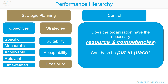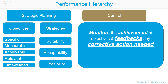With performance management, controls are used to monitor the achievement of objectives and to feed back any corrective action needed, so as to keep an organisation aligned to its strategic objectives. Management control is the tactics by which managers assure that resources are obtained and used efficiently in the accomplishment of strategic objectives. Operational control is the process of ensuring that specific tasks are carried out effectively and efficiently. It would be difficult for an organisation to monitor the achievement of objectives if adequate controls are not put in place.